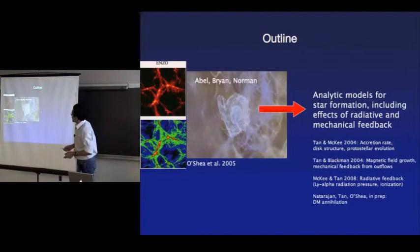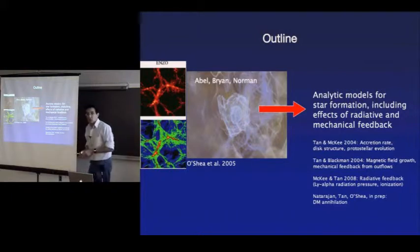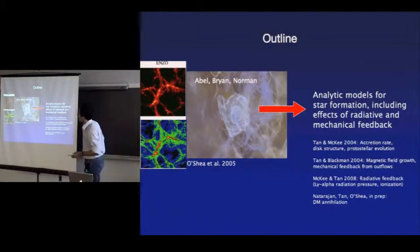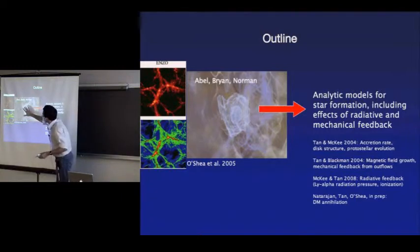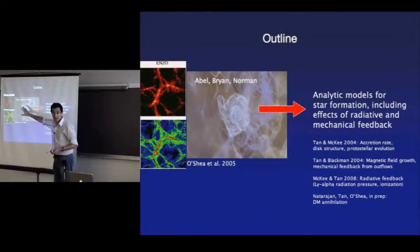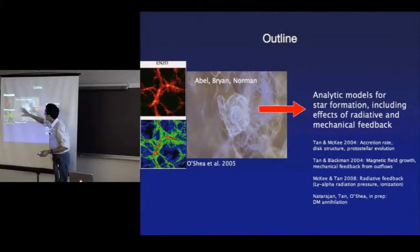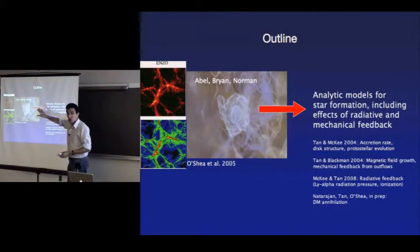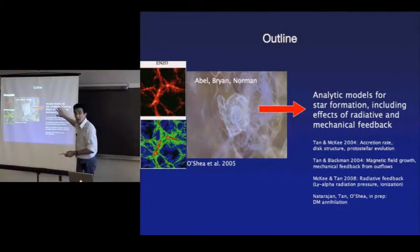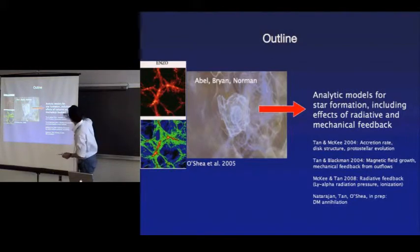Another outline of the different physical processes I'd like to talk about: what is done these days is to follow cosmological numerical simulations involving the gas, cooling, and dark matter. Dense structures form, but they can't be followed much further once the densities get very high. At this point, we try to develop analytic models for the star formation process, accounting for all these physical effects.